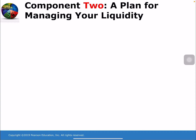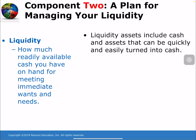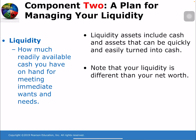Component 2 of our 7 components is a plan for managing your liquidity. Liquidity is how much readily available cash you have on hand for meeting immediate wants and needs. Liquidity assets include cash and assets that can be quickly and easily turned into cash. Note that your liquidity is different from your net worth.